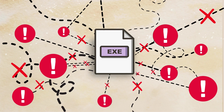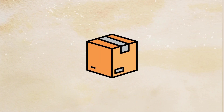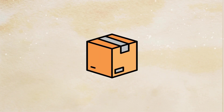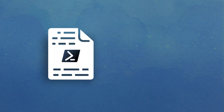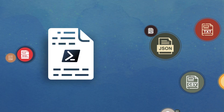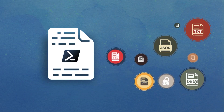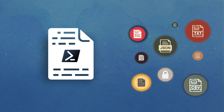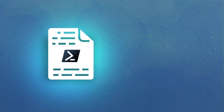Typically, this is going to mean coming up with some sort of installation package so that when you deploy the script, all of the dependencies are installed. Another thing that you can do — and you probably can't do this for all file types, but you can do it for at least some — is to actually package the dependencies into the PowerShell script, which sounds a little bit weird, but it works out really well. And that's what I want to show you how to do in this video.